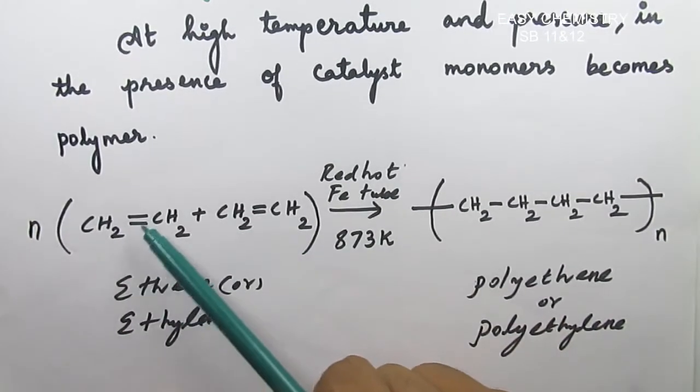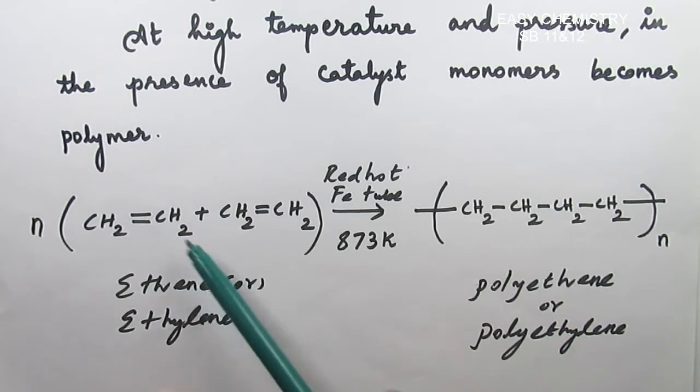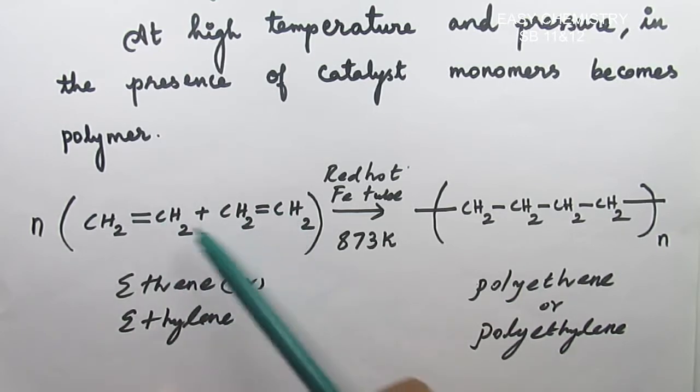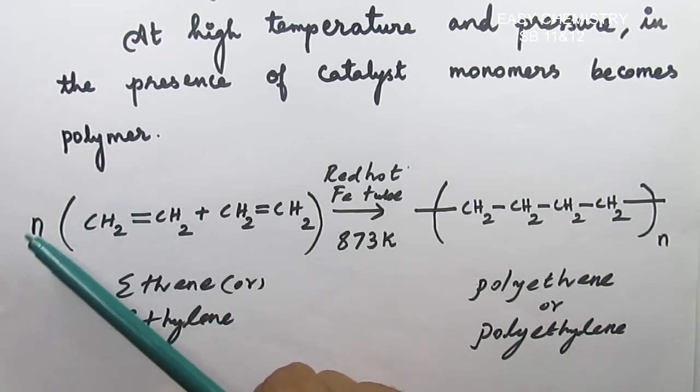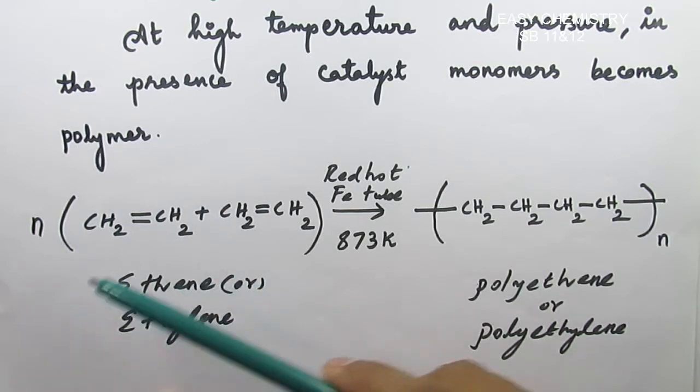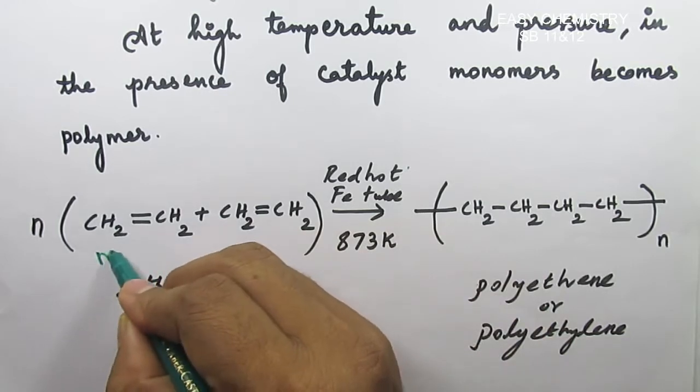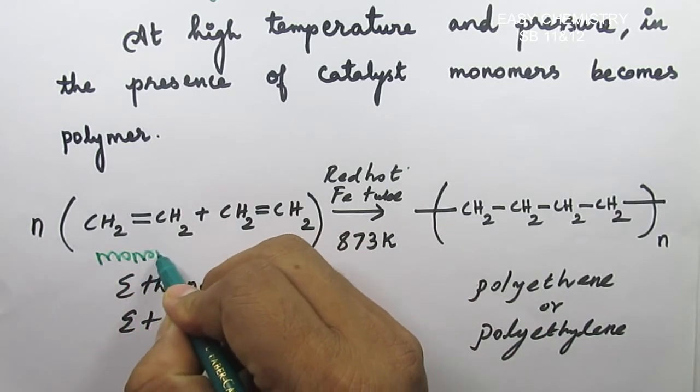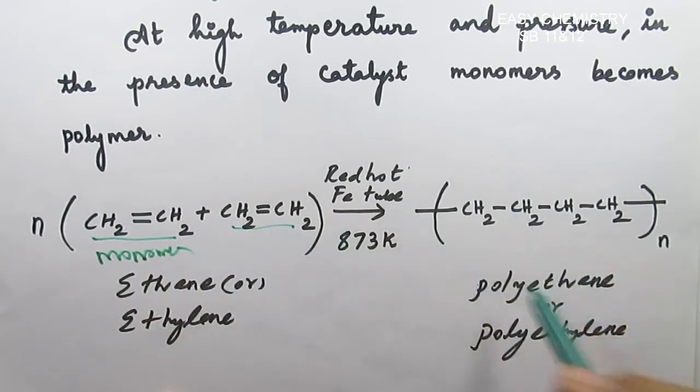Here's the double bond between the carbons - carbon 1 and carbon 2. The common name is ethylene. This is a monomer.